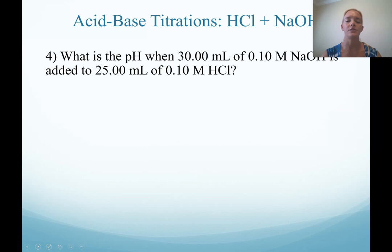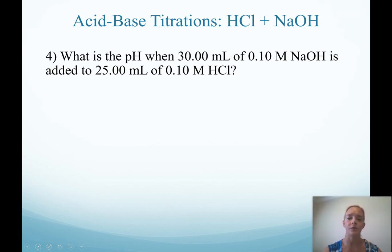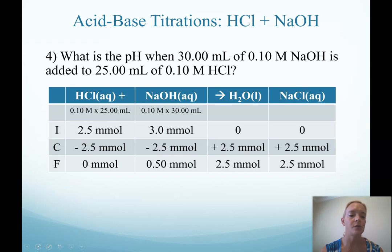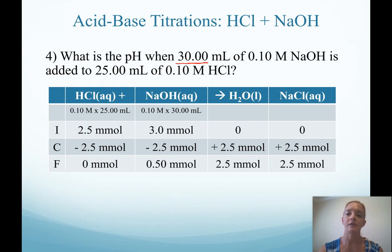Let's carry on to our last question. In this titration, we want to know the pH when we add 30 milliliters of 0.10 molar sodium hydroxide to our solution of HCl. I've set up the change table already. You should recognize that we are past the equivalence point. Since we calculated the equivalence point at 25 milliliters, if I have 30 milliliters I have to be beyond that. That means I just have excess base in solution, so I would predict a very high pH.